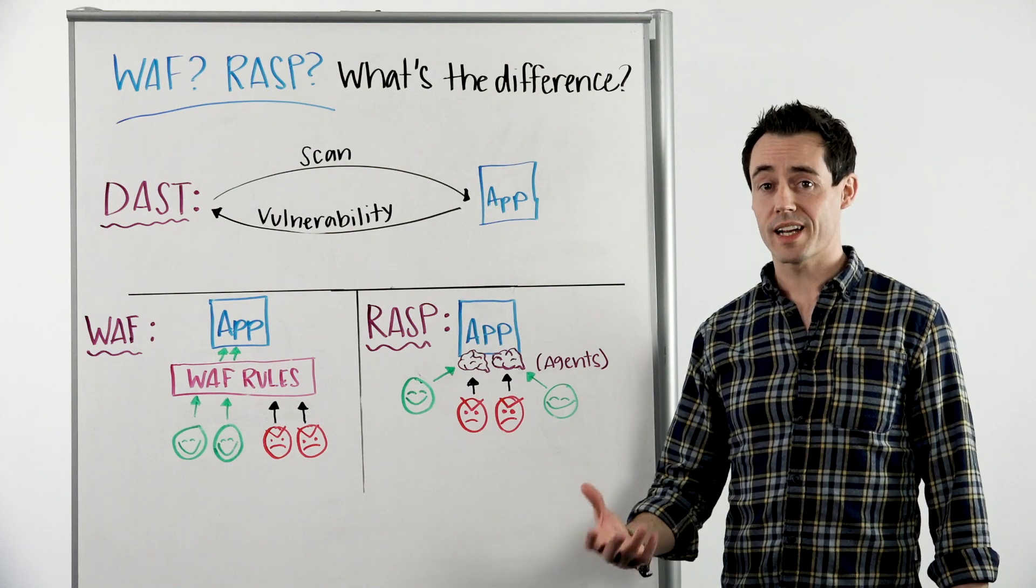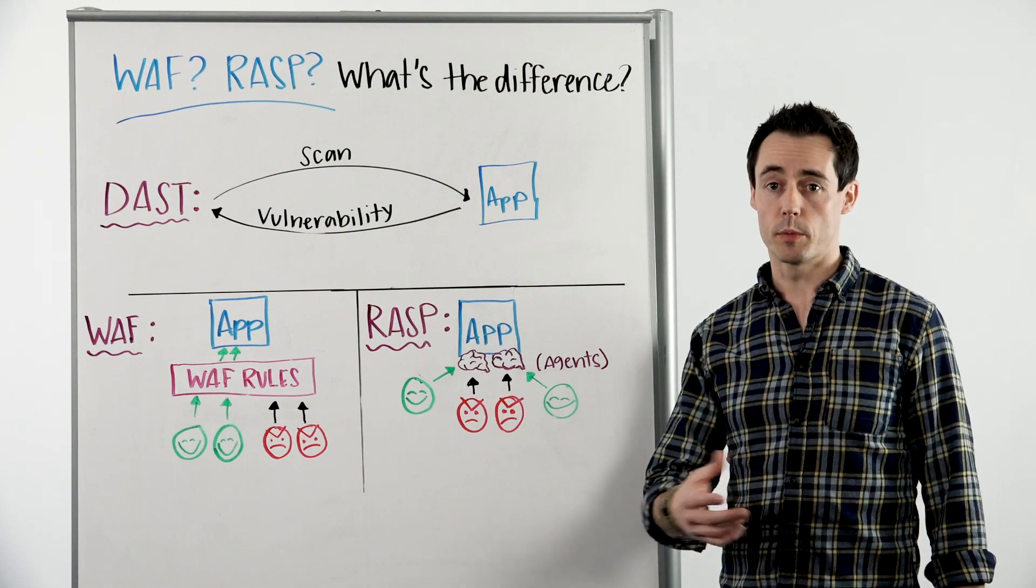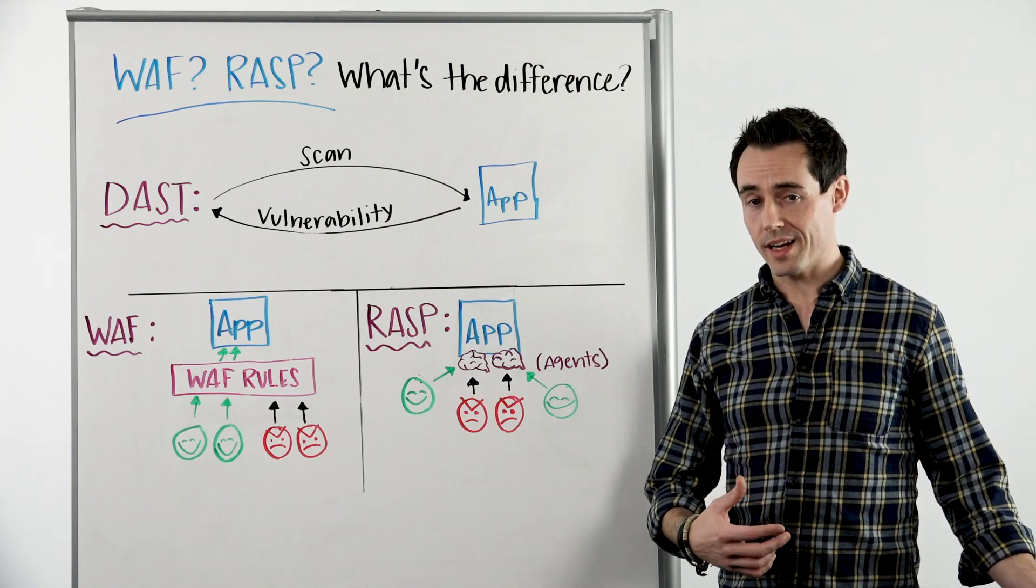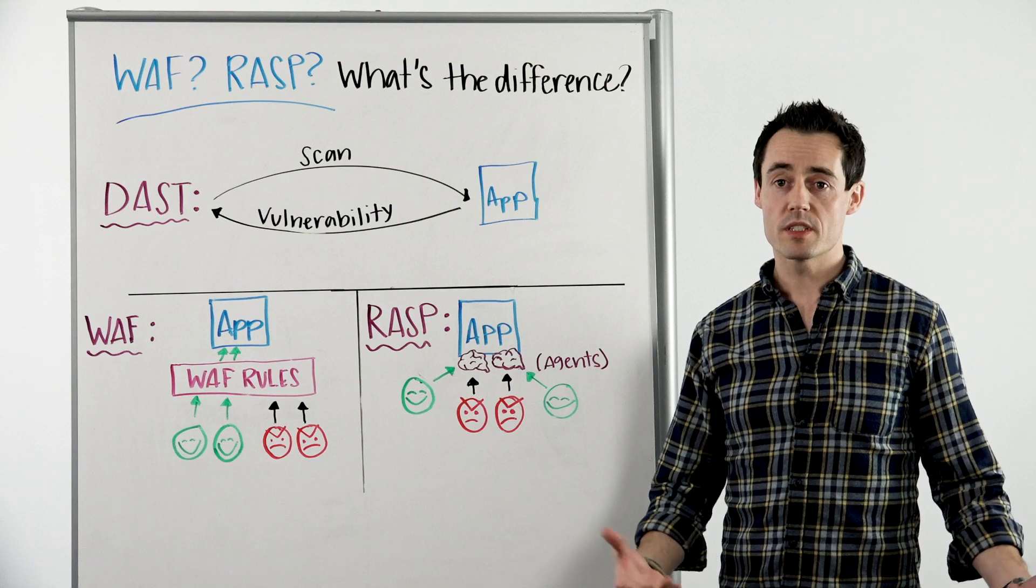Original WAFs would use a static set of rules that they would apply to incoming requests over the web, checking which ones were legit and which ones were coming from various bad actors. That would be described as stateless.